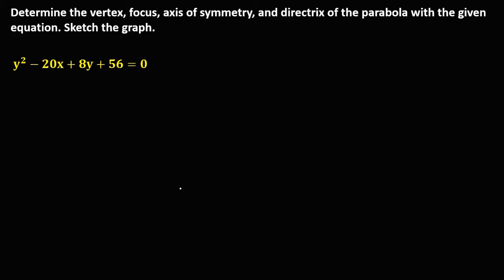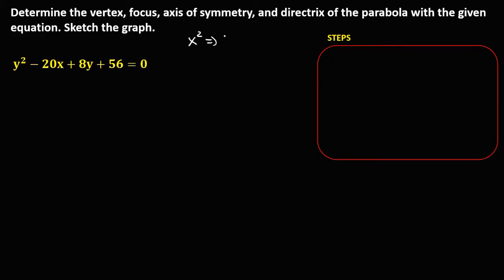To solve this problem, take note: if the given equation has x squared, then the graph of the parabola opens upward or downward. But if the equation has y squared, it opens to the left or to the right. For x squared: upward if positive, downward if negative. For y squared: negative opens left, positive opens right.